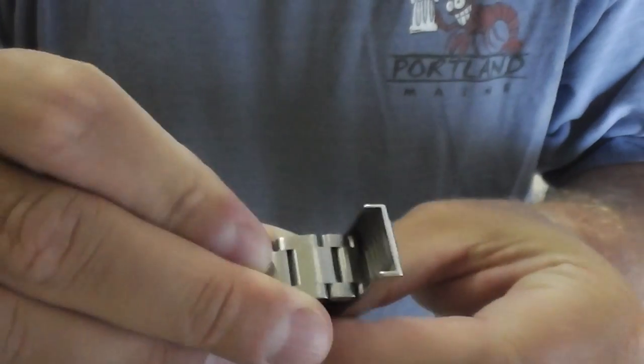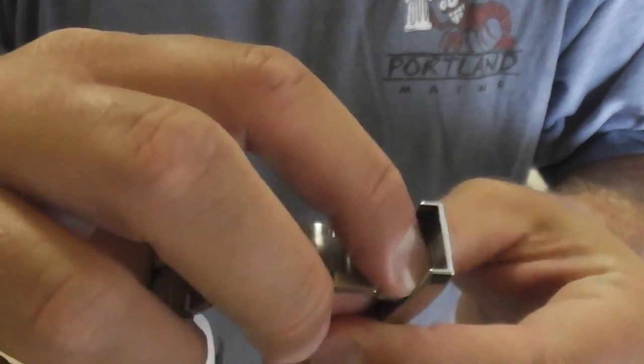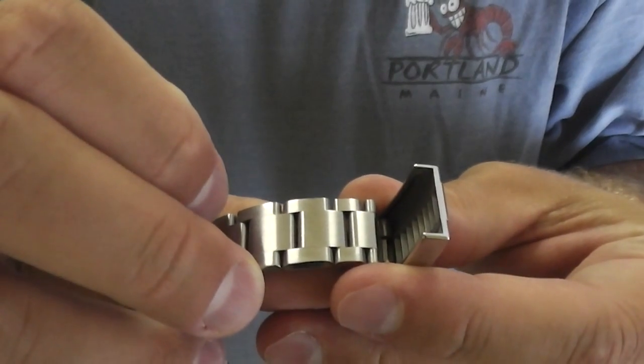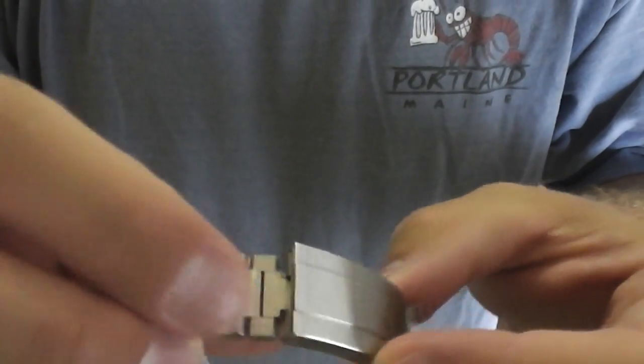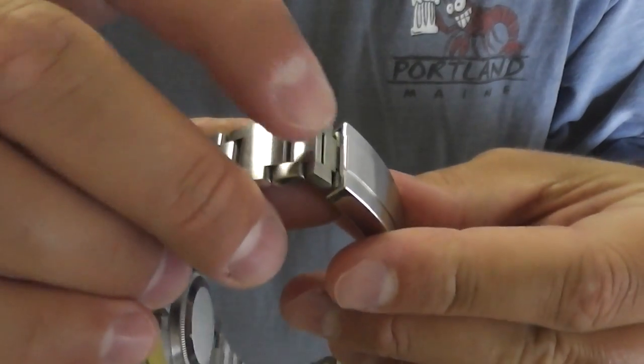all you have to do to use this Glidelock, you pull up on this and you'll hear it snap out like that. And then you can glide. See that? That's in the full position right there. And then you just snap it back down.